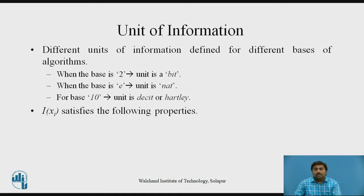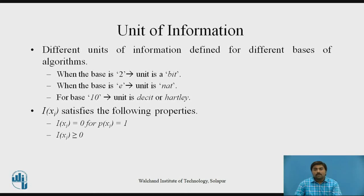The amount of information I(xj) satisfies the following properties. First, I(xj) = 0 when the probability of that event occurrence is 1, meaning the output is certain — log(1) = 0, so information is 0. Second, information is always greater than or equal to 0; it is a non-negative value. Third, it has an inverse relationship: less probability gives more information, and more probability gives less information.